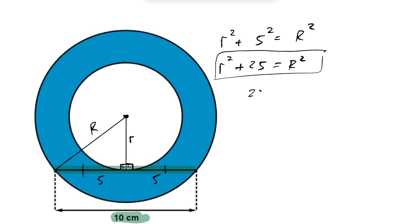I can rewrite this as 25 equals R squared minus lowercase r squared. Now what we want to find, what we're looking to find is we're looking to find the area of the shaded region. That'll just end up being the area of the big circle minus the area of the small circle.